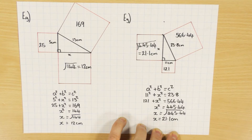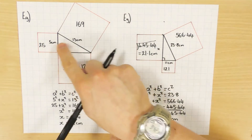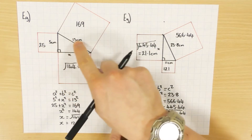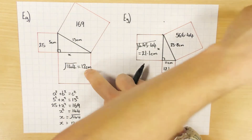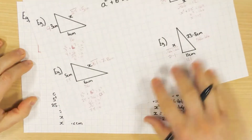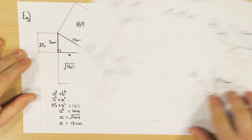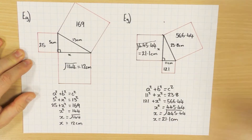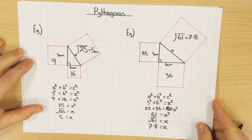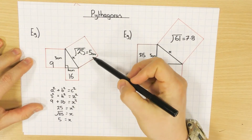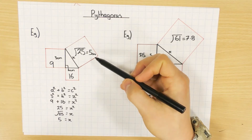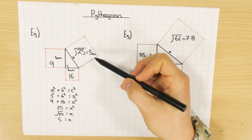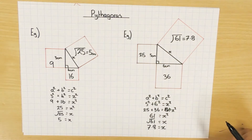Just one last little thing. You might have noticed with the 5, 13, 12 example and my first example with 3, 4, and 5 — if all the sides of a right-angled triangle are whole numbers, it's got a special name. It's called a Pythagorean triple. Just a little bit of extra there for you. Hopefully that was useful.